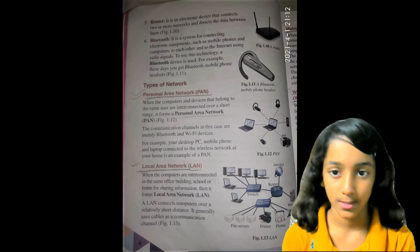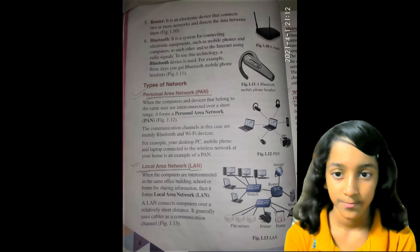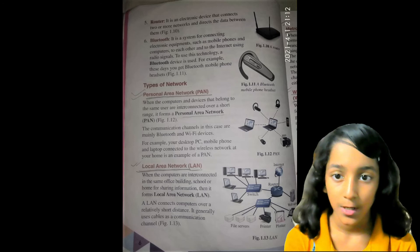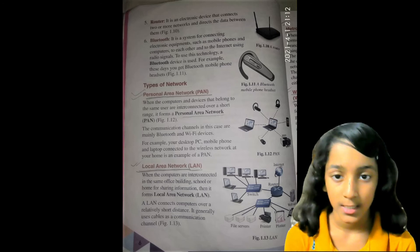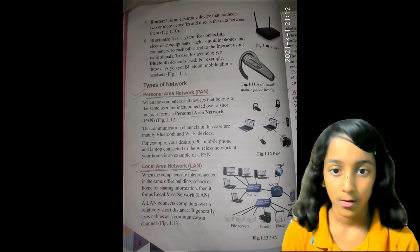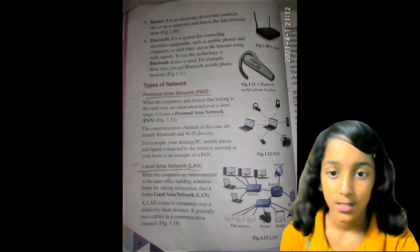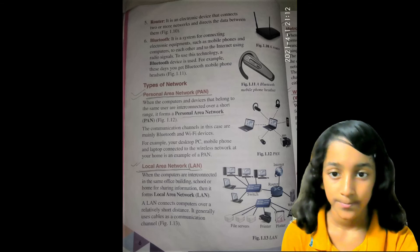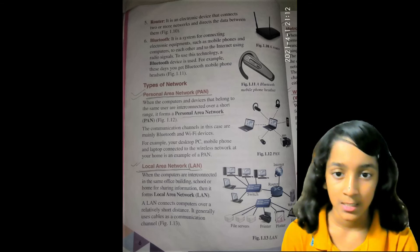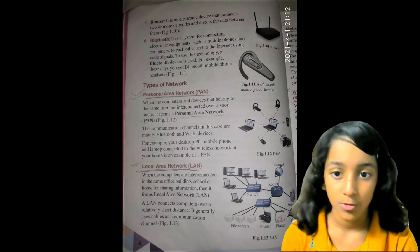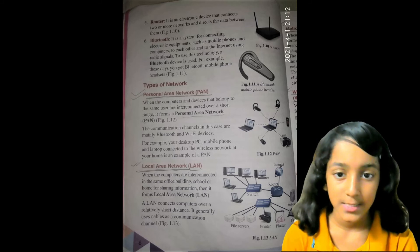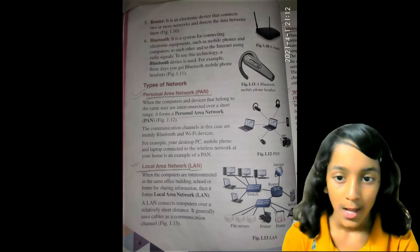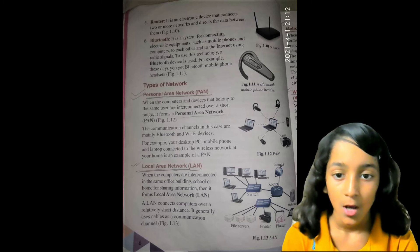Types of network. Personal Area Network: When the computers and devices that belong to the same user are interconnected over a short range, it forms a personal area network. The communication channels in this case are mainly Bluetooth and Wi-Fi devices. For example, your desktop PC, mobile phone and laptop connected to the wireless network in your home is an example of a PAN.